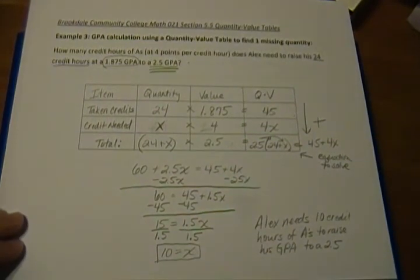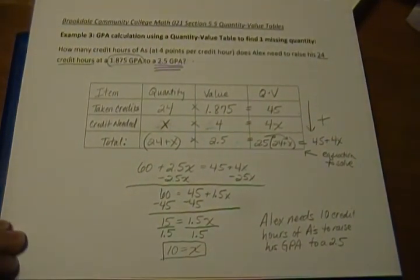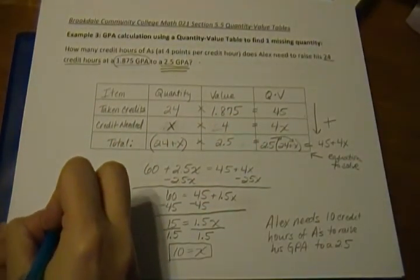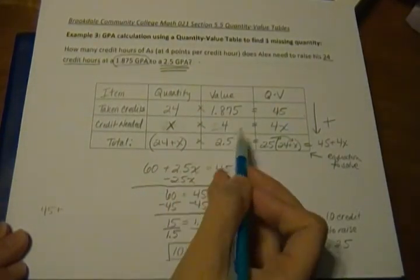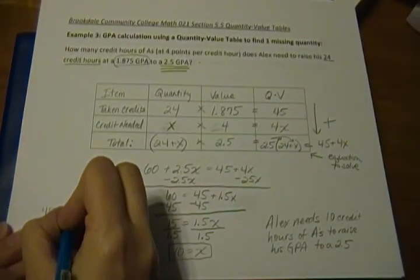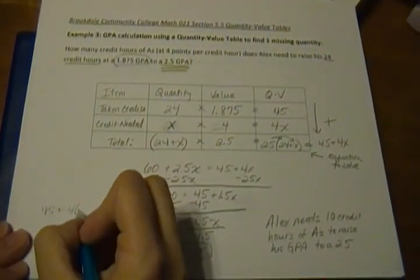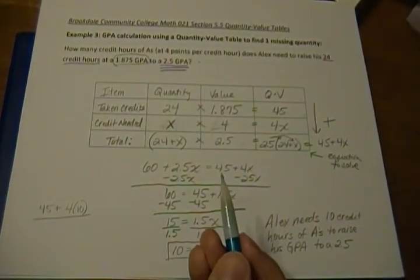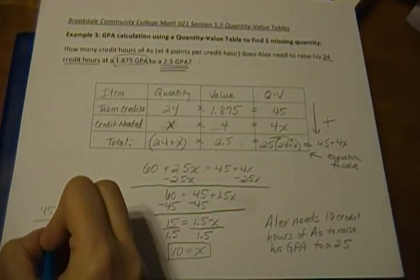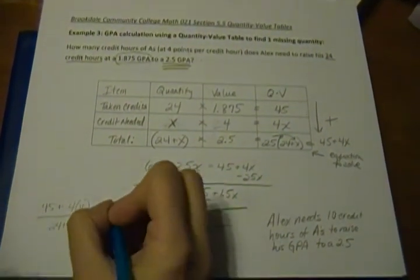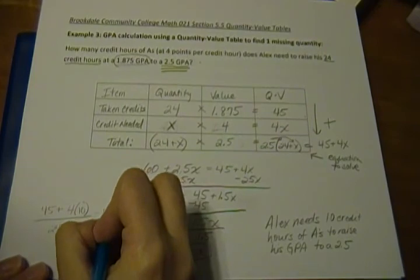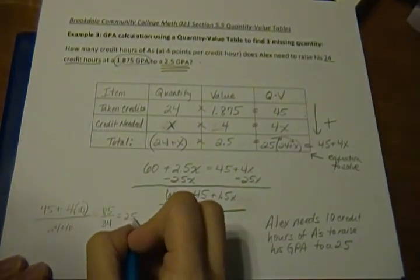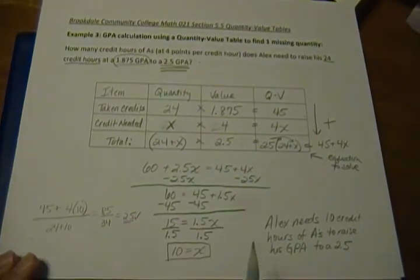Now, there's one last thing we want to do. We want to check our answer. So we have the 24 times the 1.875, which is 45, plus now the 10 times 4, which is 40, divided by our total number of credits that should be taken, which would be the 24 plus the 10. So you get 85 divided by 34, which is 2.5. And this was our target GPA, 2.5, it matches, it checks. So that means our answer here is correct.